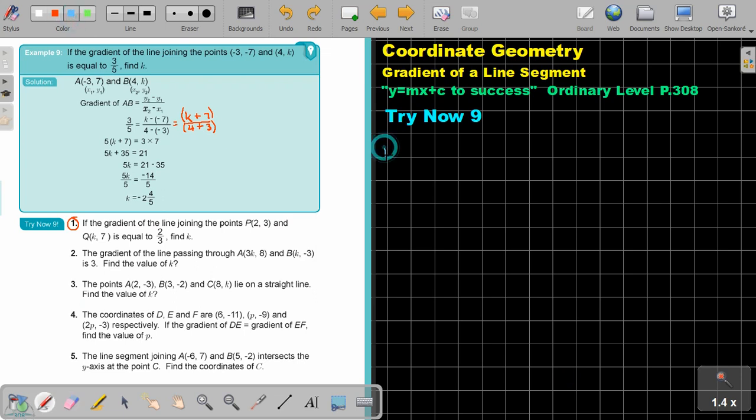Let's start. Number 1. If the gradient of the line joining the two points is equal to, find the value of k. First write down the two points. So what is the first point? Point P, which is 2 and 3. Q, which is k and 7.